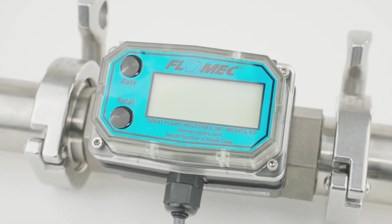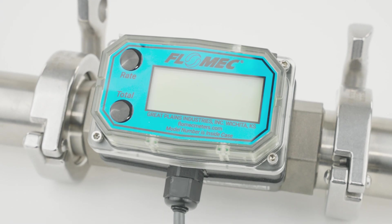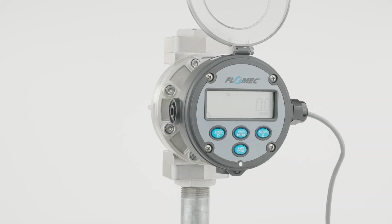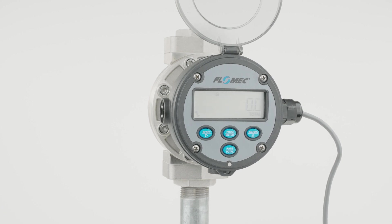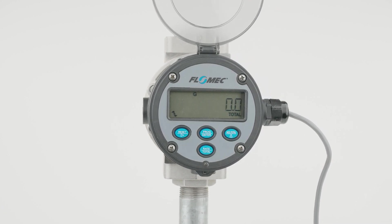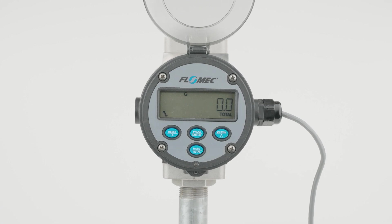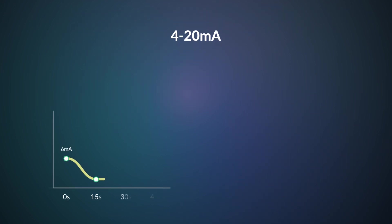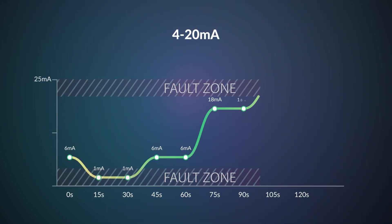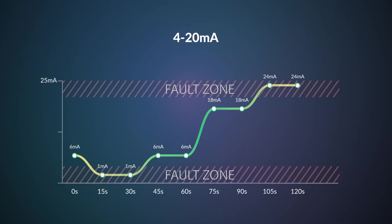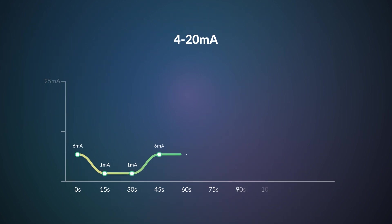When configuring a 4 to 20 milliamp output meter for your installation, your minimum flow through your installation should be set as your zero, known as your 4 milliamp setpoint. Your maximum flow should be set as your span, known as your 20 milliamp setpoint. This will allow your controller to quickly activate alarms, pumps, or valves if flow falls below your 4 milliamp setpoint or rises above your 20 milliamp setpoint.